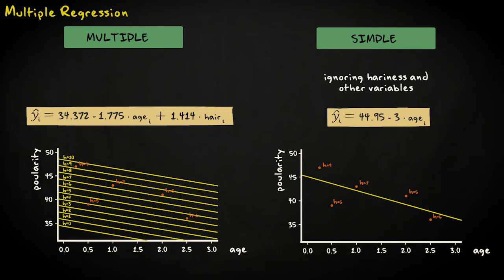By adding hairiness as a predictor, we control for the effect of hairiness when we consider the relation between cat age and popularity. We consider the relation for each level of hairiness, which might result in a stronger or weaker relation between cat age and popularity.